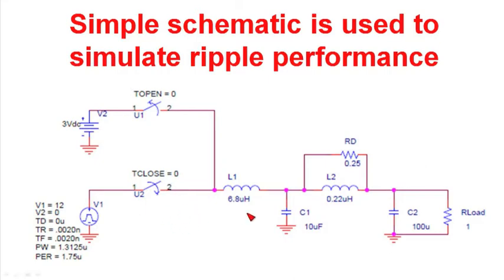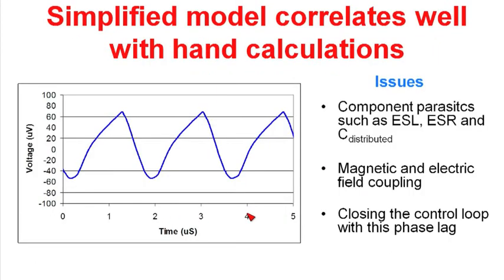After a portion of time you can take a look at the output ripple out of the power supply. This prediction says that we're going to get about 100 microvolts peak to peak on the output. If you go through the hand calculations you'll find that this is pretty consistent.